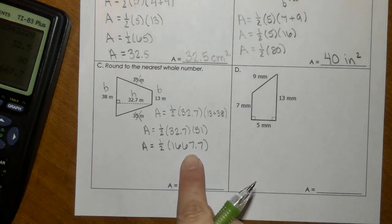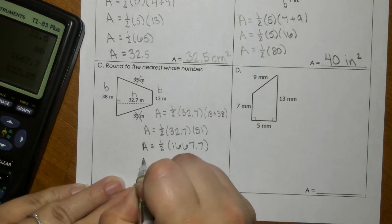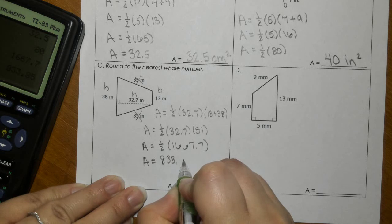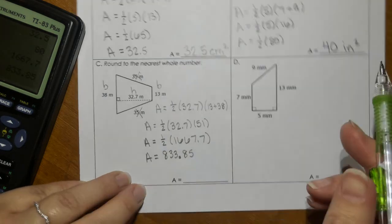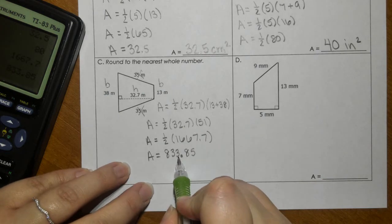This number here, 1,667.7. We divide that in half, and we get 833.85. The directions say round to the nearest whole number, so this 8 makes that go up to 834.